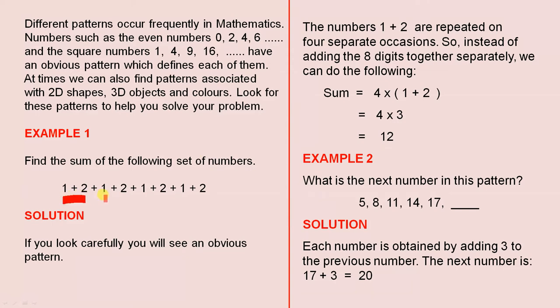So instead of adding the 8 digits together separately, we can do the following. There's 1 plus 2, and again, and again, and again. Can you see how it's repeated on 4 separate occasions? So the sum of all the numbers will be 4 times (1 plus 2). If we add 1 plus 2 together that gives us 3, 4 times 3 is 12, and that's the sum of the numbers.